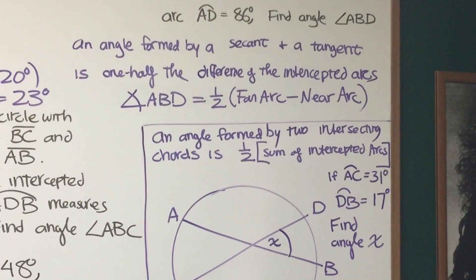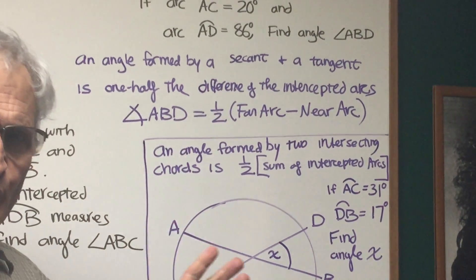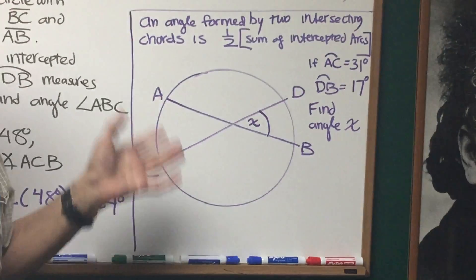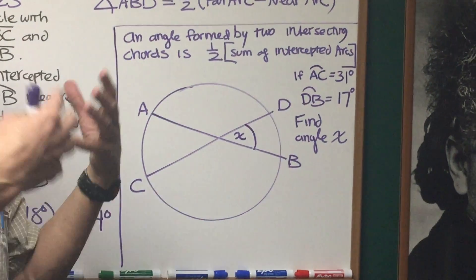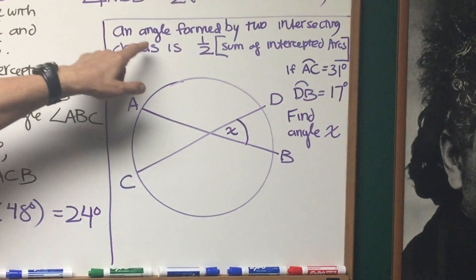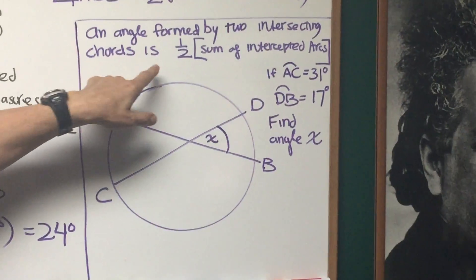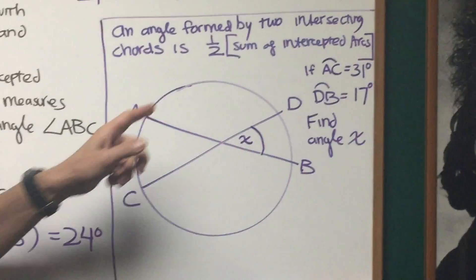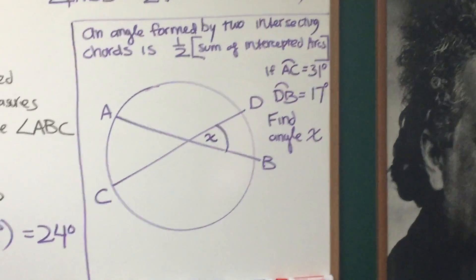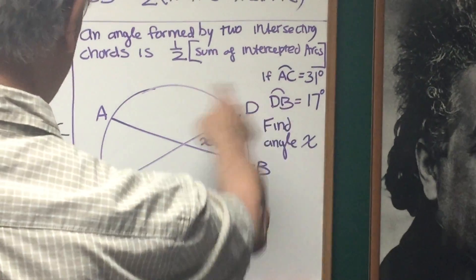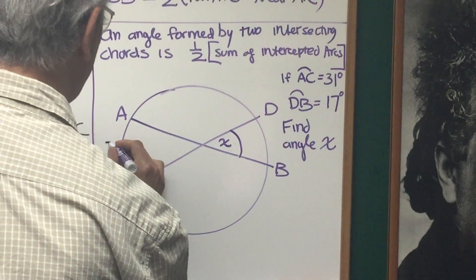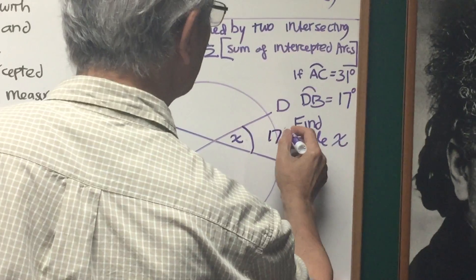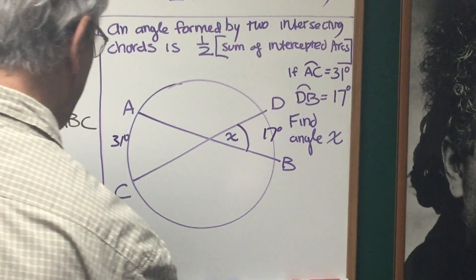Same formula. The angle that subtends those intercepted arcs is one half the far arc minus the near arc. Now I put this on the same problem but to make sure you have it make a distinction in your mind if the arcs are intercepted internal to the circle then we have a slightly different formula. An angle formed by two intersecting chords is one half the sum of the intercepted arcs. So for example in this problem arc AC, arc AC is 31 degrees, arc DB is 17 degrees. What is the value of angle X?